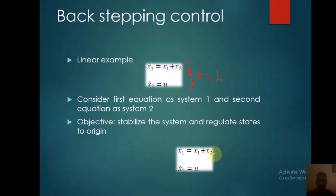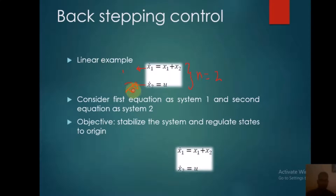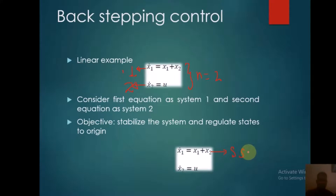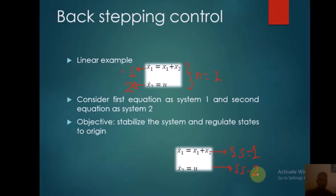Before that, consider equation one and equation two as shown on the slide. This first equation is subsystem one, and the second equation is subsystem two. These are not written in state-space form; they are written as subsystems — subsystem one and subsystem two.